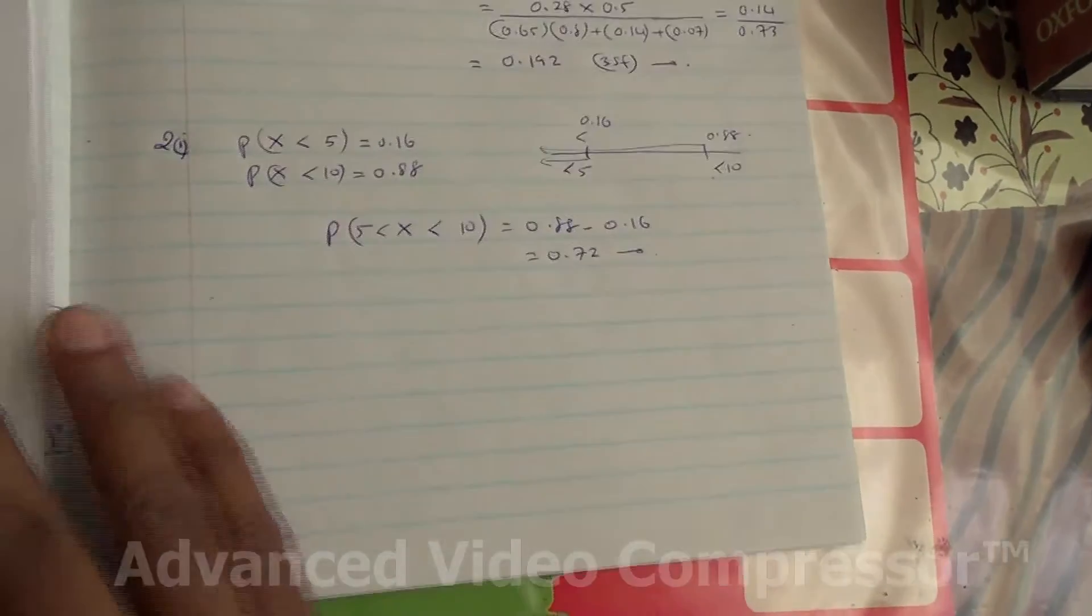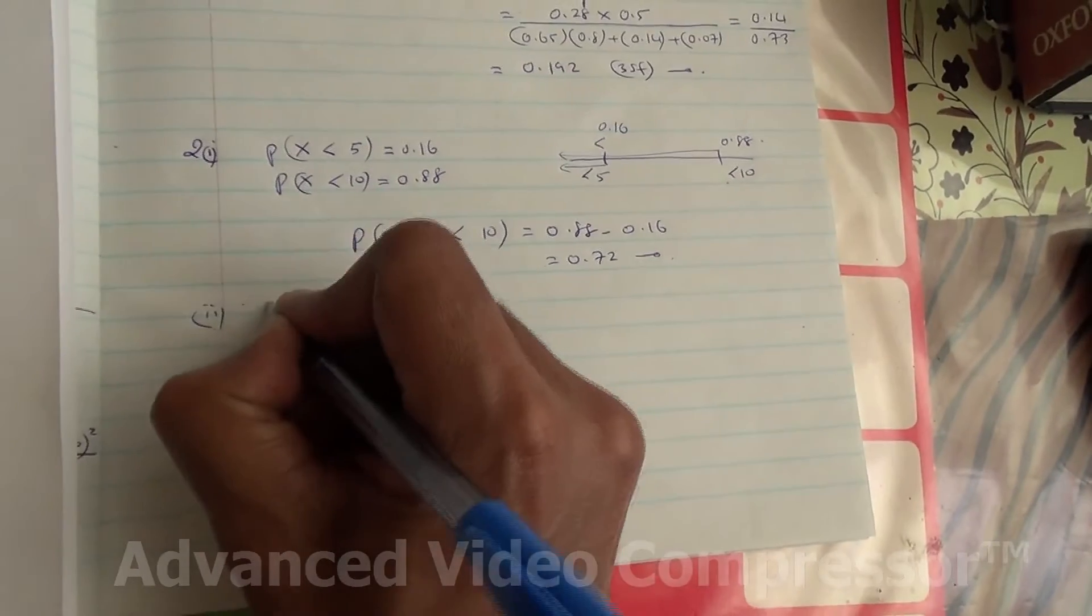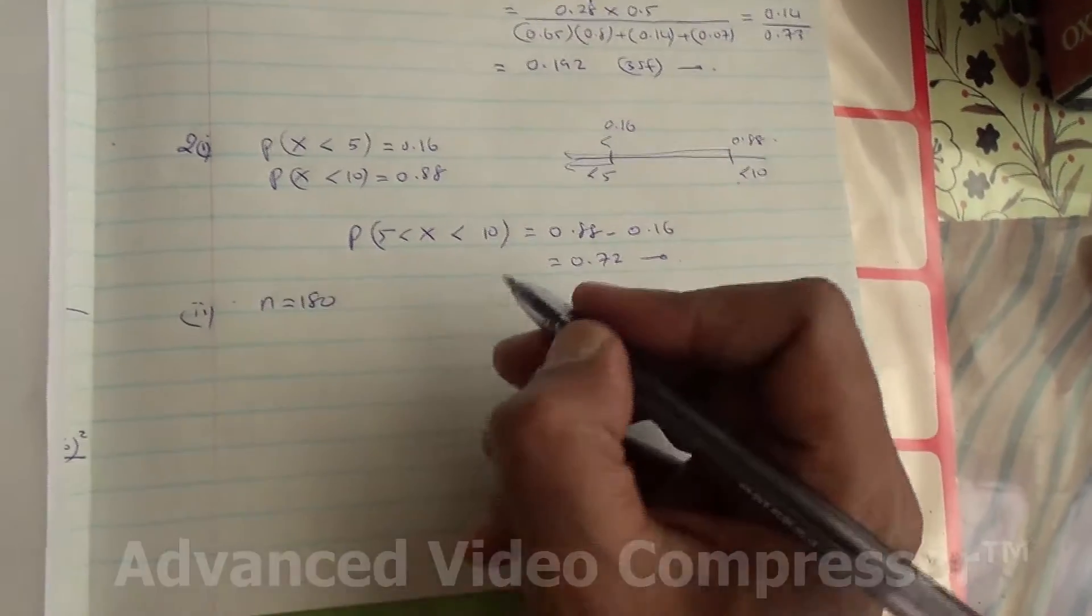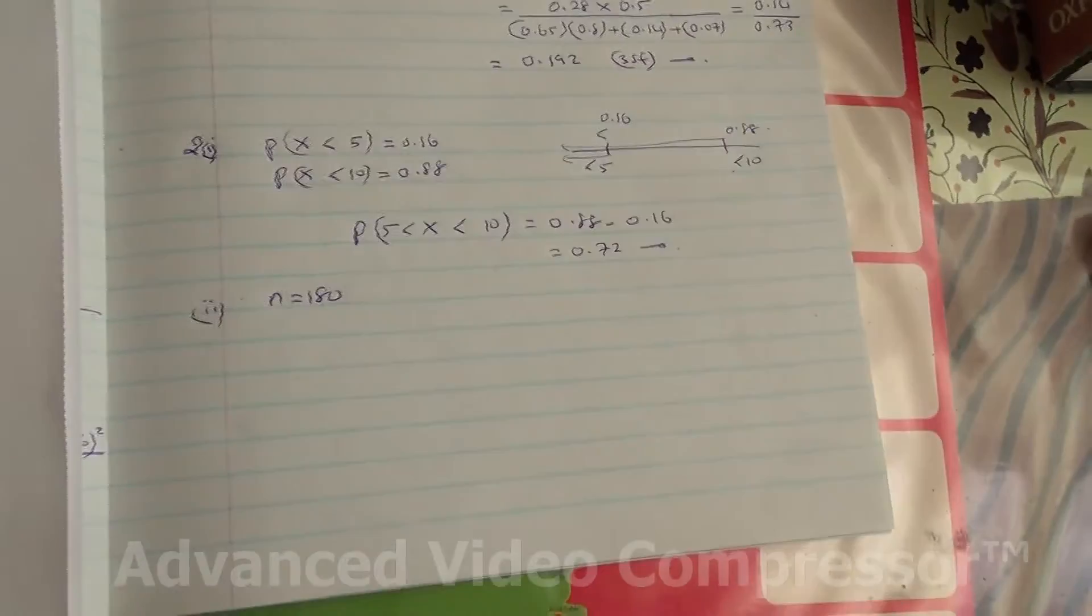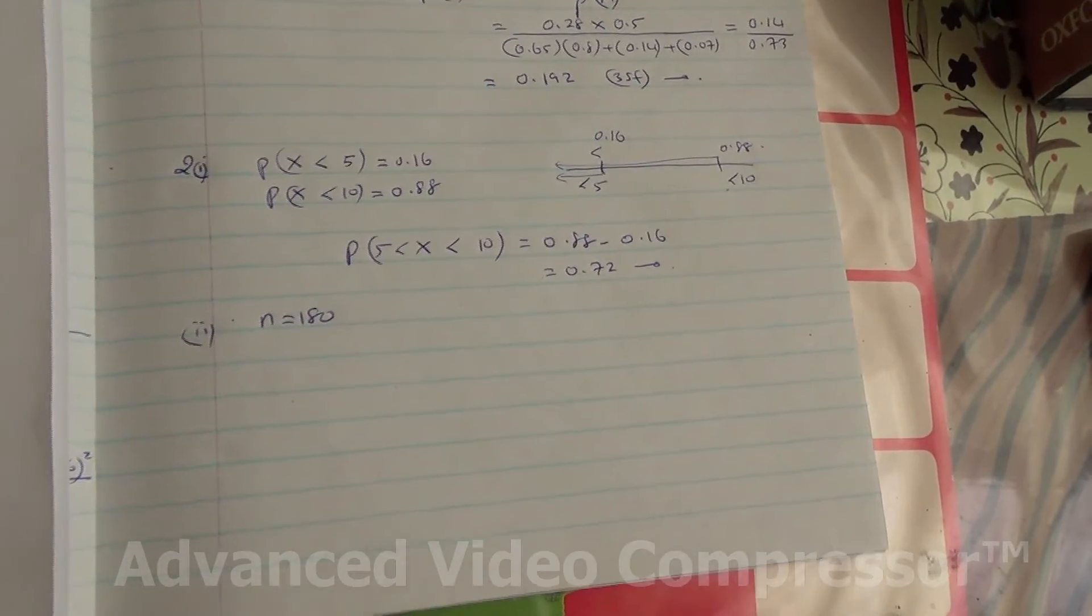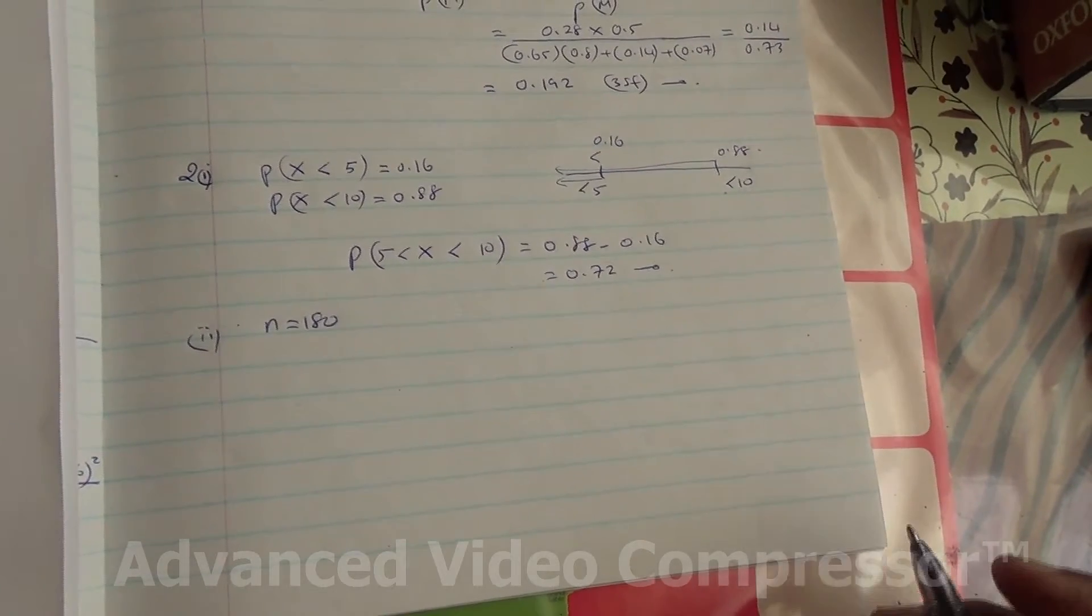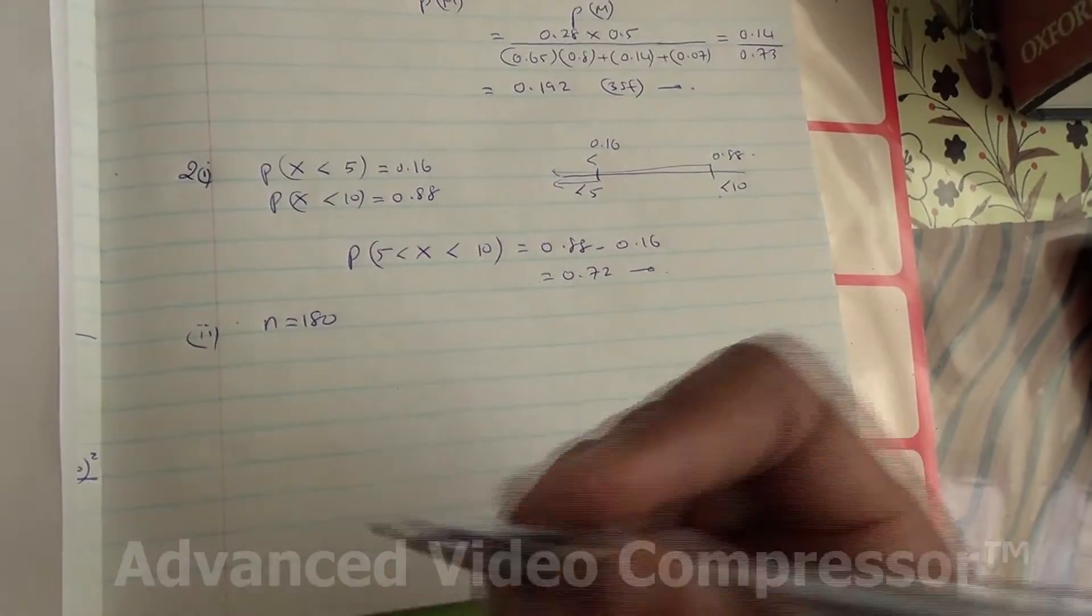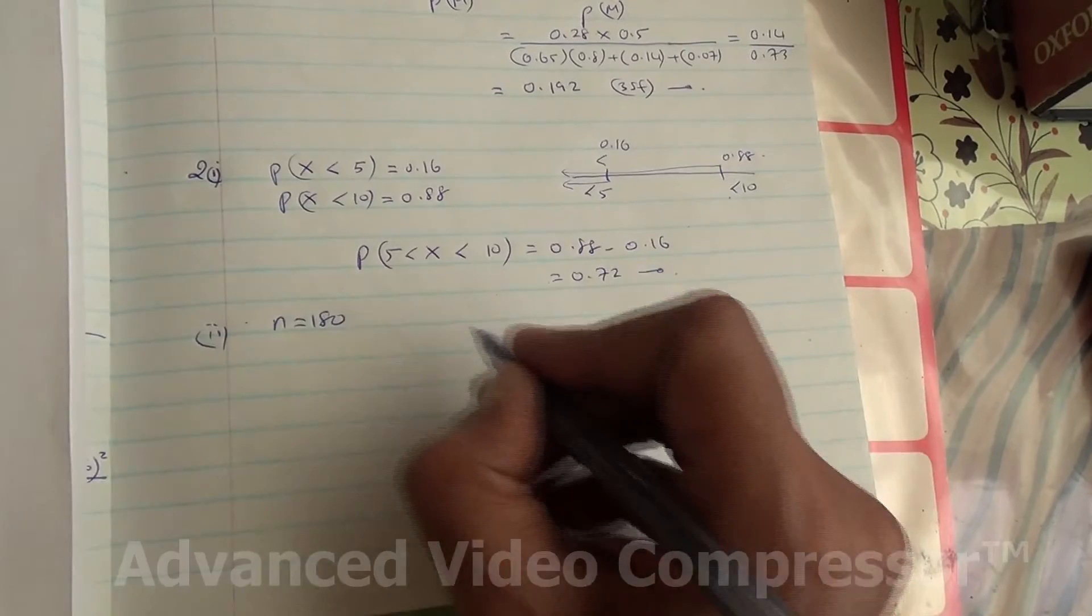For the second part, there is a sample size here, 180 people visiting the dentist. We need to use a suitable approximation. Therefore, we're going to be calculating the probability as required in the question that more than 115 people wait between 5 and 10 minutes. First of all, if we have to use a suitable approximation, we need to find NP.